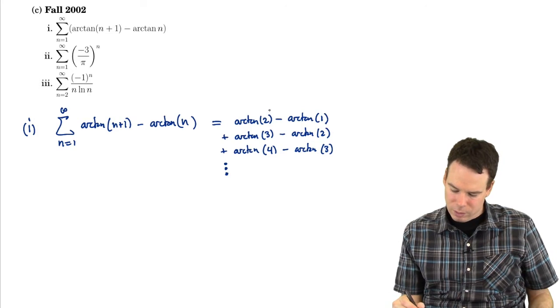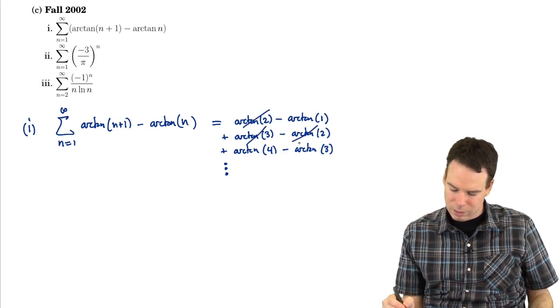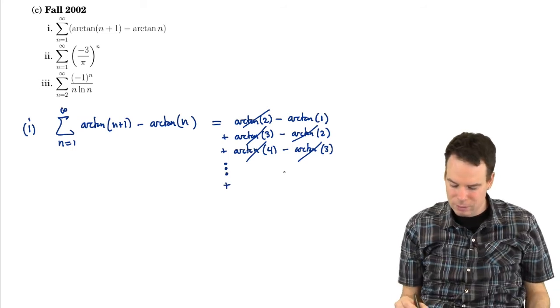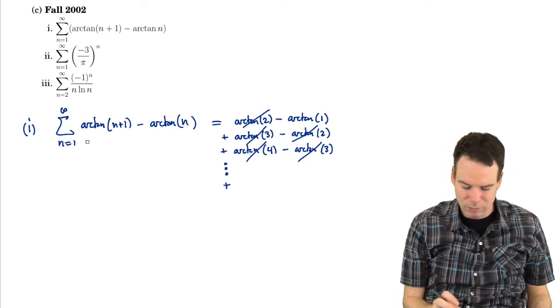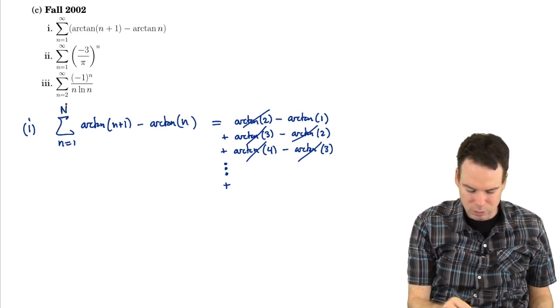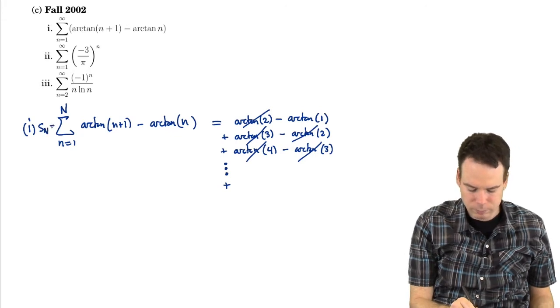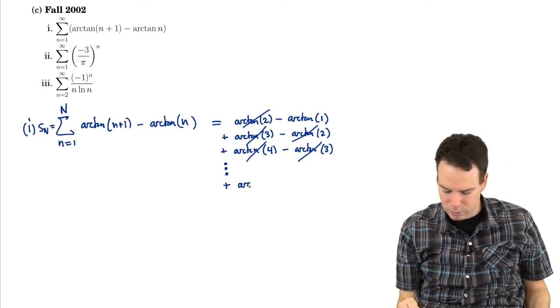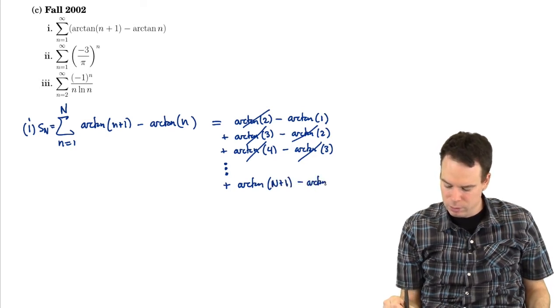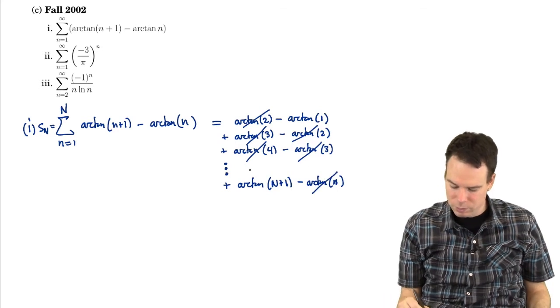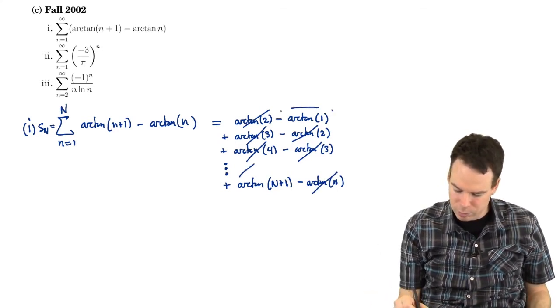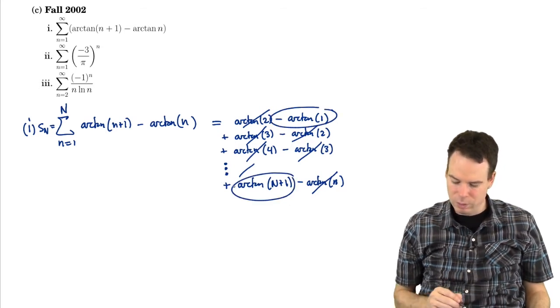So aside from the first term, every other term seems to cancel with another one in the list. So to make this canceling precise, what I'm going to do is instead of look at the whole series, I'm going to look at just the nth partial sum, s sub n. So this goes up to arc tan of n plus 1 minus arc tan of n. Arc tan of n would have cancelled with something before and so on down the line, so there's only a couple of terms that survive in the nth partial sum. So we have a closed form for the nth partial sum.